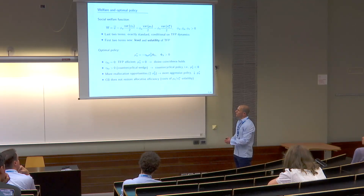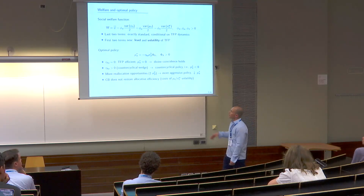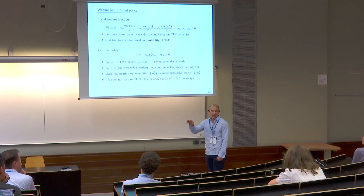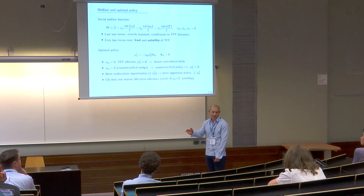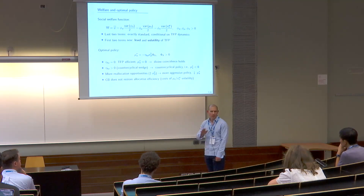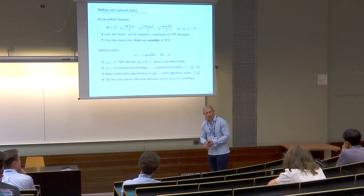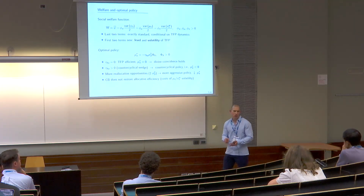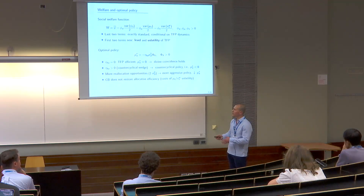Let's go through special cases. If there are no distortions — tau lambda A is zero — the laissez-faire level of TFP is efficient. The only distortion to TFP would come from the output gap. In that version, the central bank achieves all its objectives with no trade-off: just stabilize the output gap, which also stabilizes inflation and generates an efficient level of TFP. This is like a divine coincidence — or what I'll call a holy trinity.